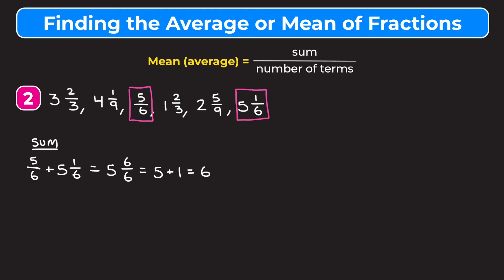And now I'm going to add the other four numbers. So we're going to add three and two thirds, four and one ninth, one and two thirds and two and five ninths. Let's go ahead and write those down. And then I'll add the whole number parts separately and the fraction parts separately.